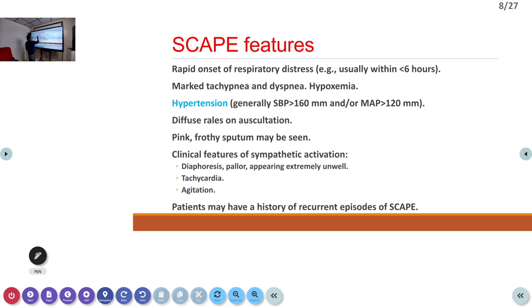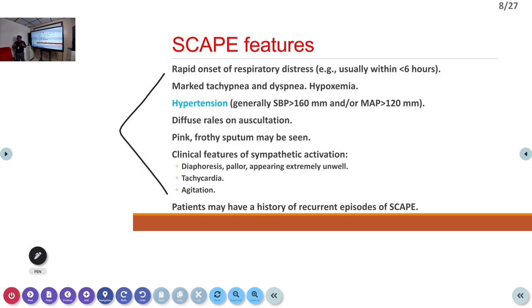In SCAPE, all features occur rapidly — within minutes — so patients must rush to hospital. Pulmonary edema can be a chronic process, but when a patient presents suddenly with pulmonary edema to the emergency room, it falls under the SCAPE category. Most emergency room cases are in this SCAPE category.